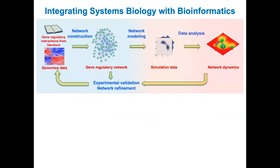Here shows the overall strategy for the approach that we are building. We first integrate both literature and genomics data to construct large gene regulatory networks with bioinformatics. Then, using mathematical modeling, we aim to identify the core gene regulatory circuit. Mathematical modeling can also simulate circuit dynamics, from which we propose new predictions that can be tested experimentally. This is an iterative process to improve models.